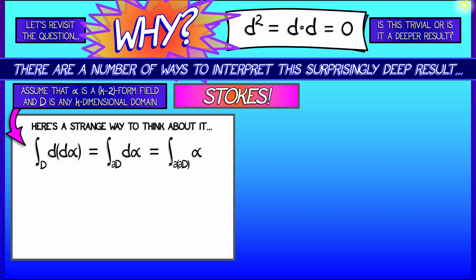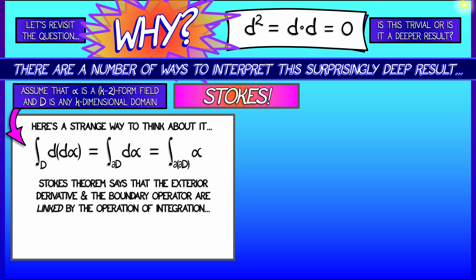And now, chaining these things together, well, something interesting happens. And a deep truth is revealed. A truth that says what Stokes' Theorem is really telling you is that the exterior derivative operator, d, and the boundary operator are linked.